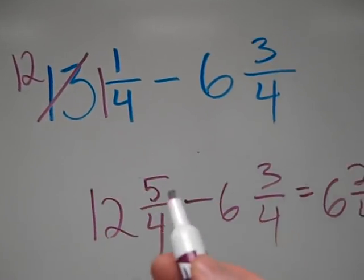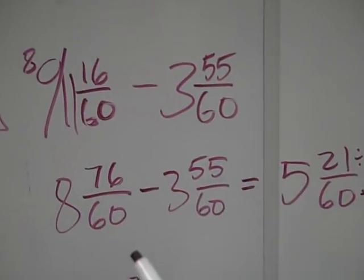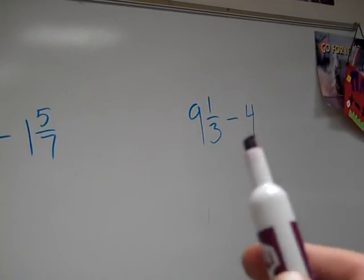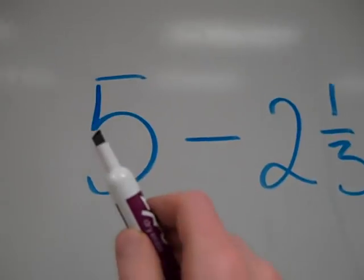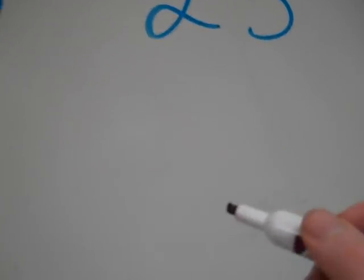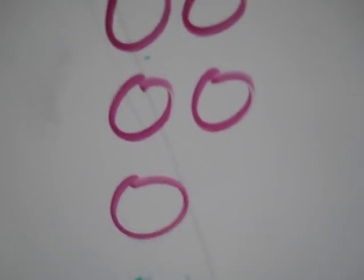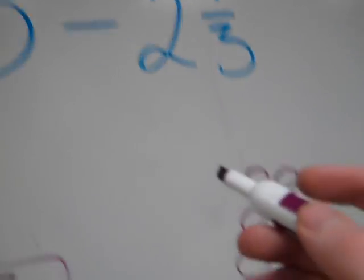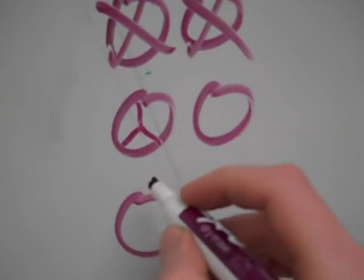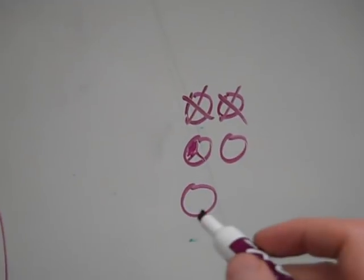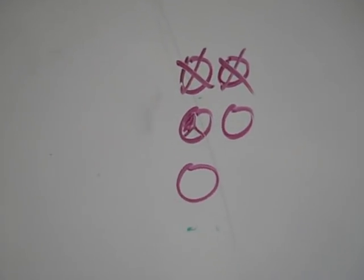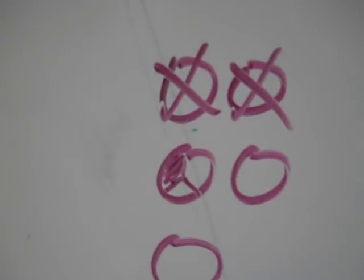These last examples work with whole numbers minus mixed numbers and mixed numbers minus whole numbers. Here I have 5 minus 2 and 1 third. People usually think the answer is 3 and 1 third, but that's not true. Here's a picture: I have 5 wholes, I take away 2 of them leaving 3, then I still need to eliminate 1 third of one, so I break 1 into thirds and eliminate the 1 third. You can see it's not 3 and 1 third left — it's 2 and 2 thirds left.